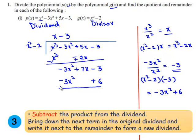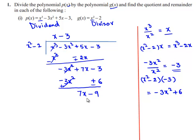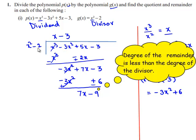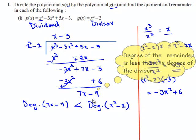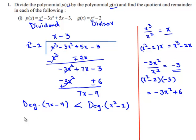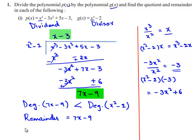On subtracting, the signs are changed. Minus 3x square and plus 3x square cancel. We have 7x minus 3, and minus 6 gives minus 9. So this becomes 7x minus 9. The degree of 7x minus 9 is less than the degree of the divisor x square minus 2, so we stop the division here. The remainder is 7x minus 9 and the quotient is x minus 3.